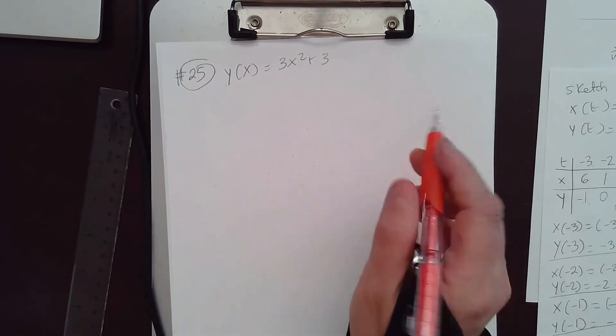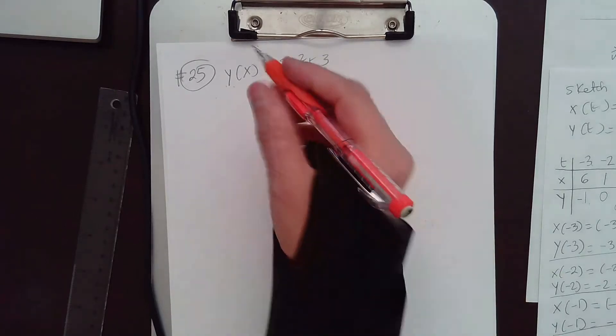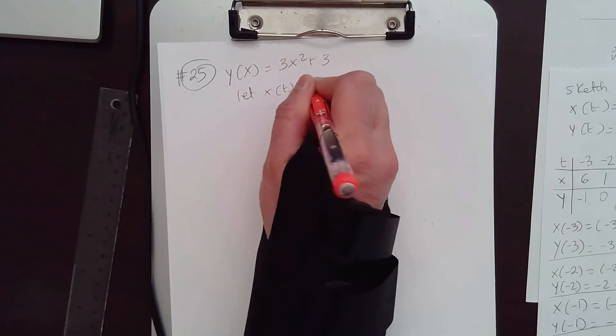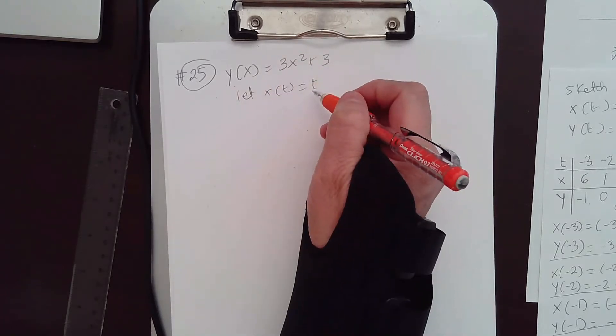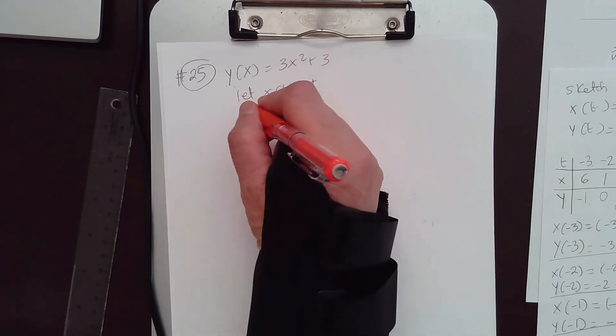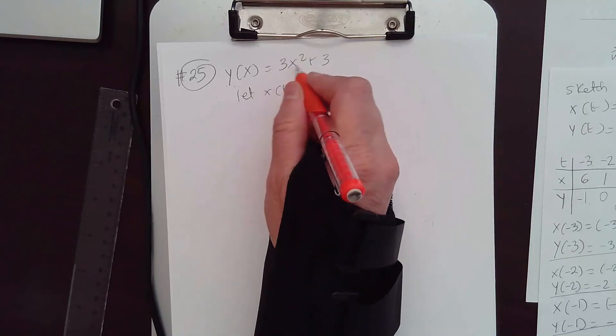So, the simplest way to do this, if you notice that y is a function of x, so if you let x(t) equal to t, and you substitute t for x into the given equation, so y(t) would be 3t squared plus 3.